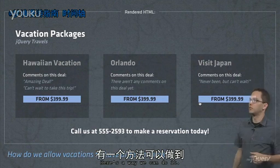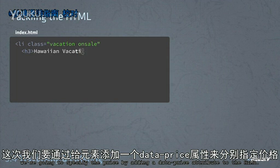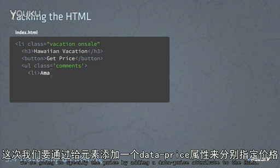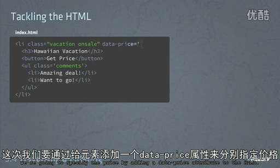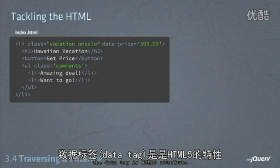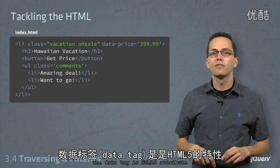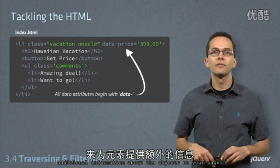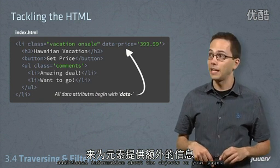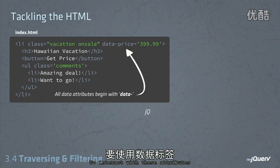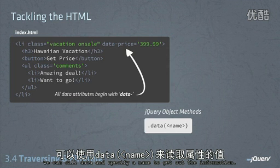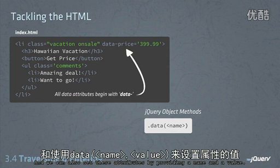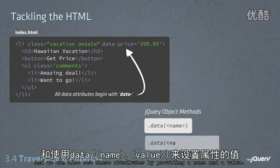Here's one way we can do it. In our HTML we're going to specify the price by adding a data-price attribute. The data tag is an HTML5 attribute you can add to any of your elements to provide additional information about the objects on your page. To interact with these attributes, we can call data then specify a name to get out the information, and we can also set these attributes by providing a name and a value.